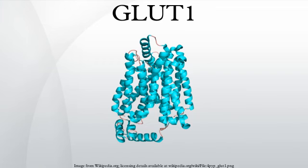Glucose transporter 1, also known as solute carrier family 2, facilitated glucose transporter member 1, is a uniporter protein that in humans is encoded by the SLC2A1 gene. GLUT1 facilitates the transport of glucose across the plasma membranes of mammalian cells.